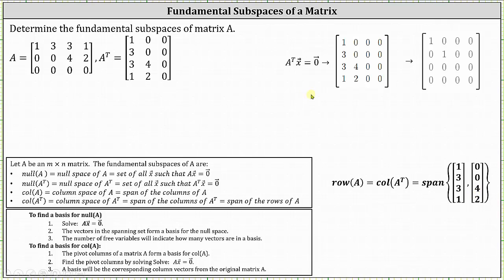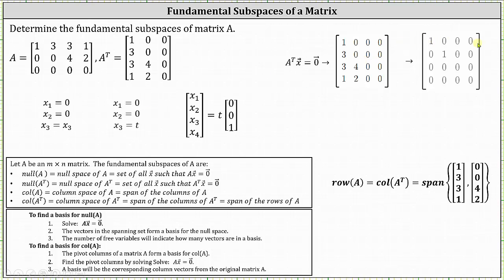Continuing to solve, the first row of the augmented matrix in reduced echelon form indicates x₁ equals zero. The second row indicates x₂ equals zero. There is no pivot in column three, so x₃ is a free variable. Parameterizing the solution by letting x₃ equal t, all solutions to A transpose times vector x equals a zero vector are vectors x in the form of t times the vector (0, 0, 1). Which means the vector (0, 0, 1) forms a basis for the null space of A transpose, and the null space of A transpose is equal to the span of the vector (0, 0, 1).